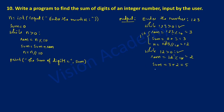Next statement: n = 12 floor-divided by 10, which gives quotient 1. So 1 is equated to variable n. The second iteration is now complete.